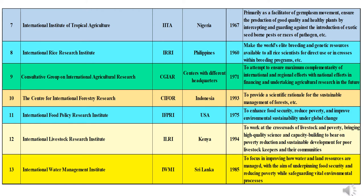Ninth is CGIAR — Consultative Group on International Agricultural Research — with centers at different headquarters, formed in 1971. Its objective is to ensure maximum complementarity of international, regional, and national efforts in financing and undertaking agriculture. Tenth is CIFOR — Center for International Forestry Research — headquartered at Indonesia, formed in 1993. CIFOR is a scientific research organization that conducts research on the use and management of forests, with a focus on tropical forests in developing countries.